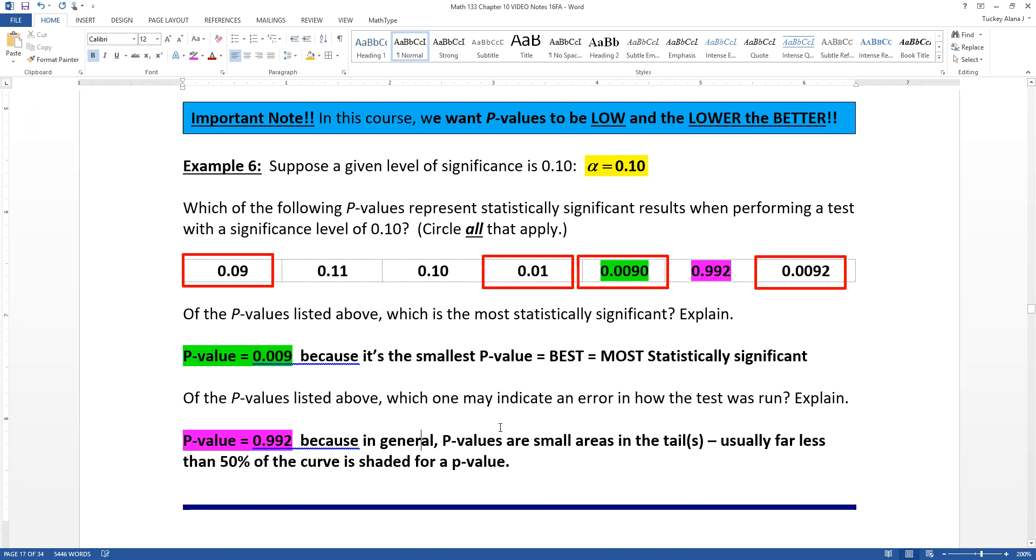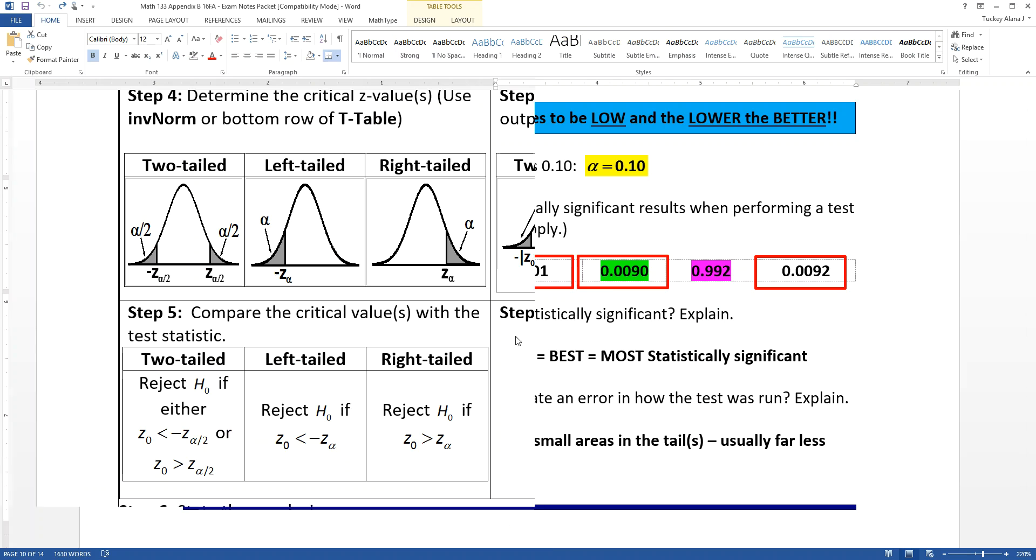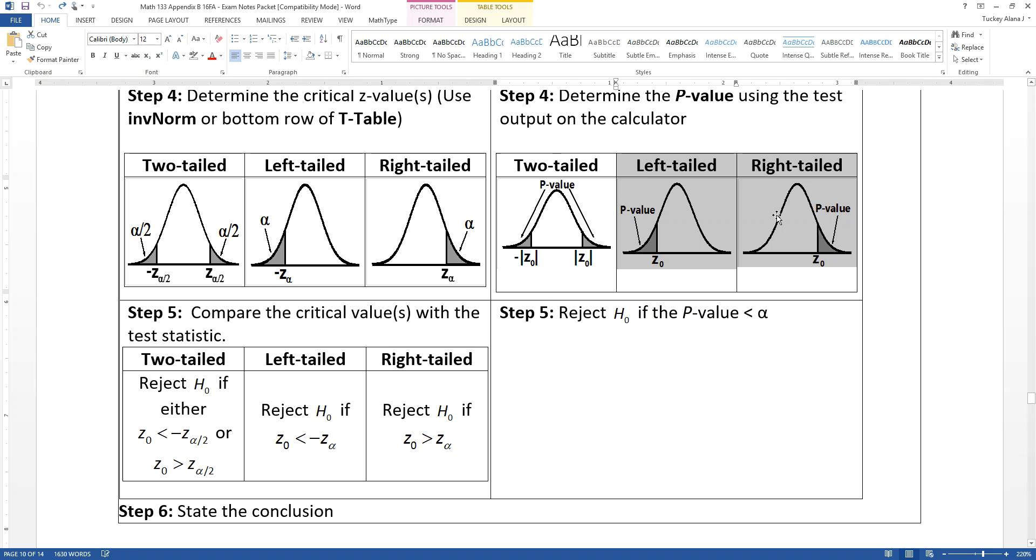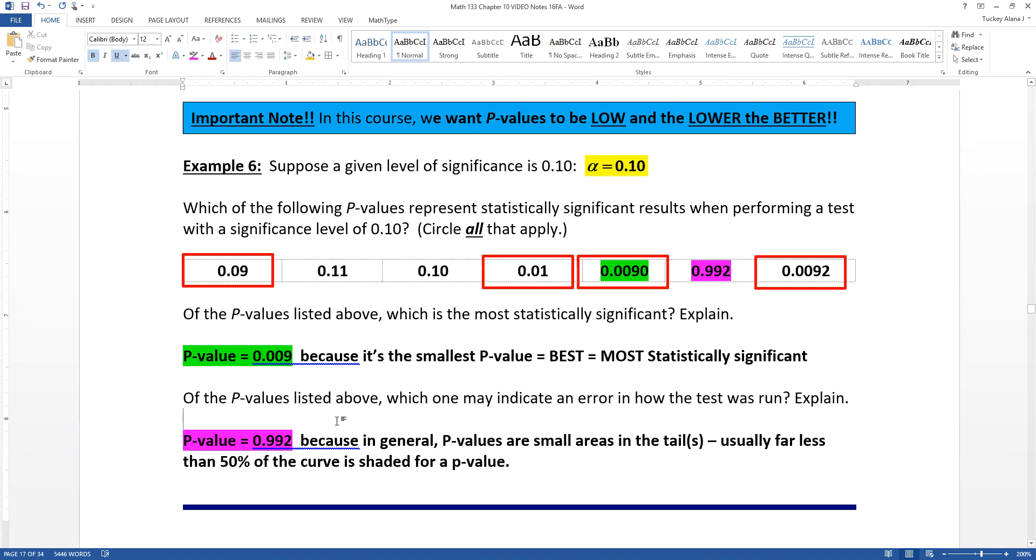All right. So in general, p-values are very small. They're areas in the tail or tails. So if it's a single tail test, a one tail test, it's just the area in the left tail or the right tail, like a left tail test or right tail test, or it could be both the tails together if it's a two tailed test. But either way, it's a small amount. And so having it be such a large value of 0.992 means 99.2% of that curve was shaded. That's probably indicating that there's an error somewhere because usually p-values are very small, less, much less than 50%, for example, of the curve should be shaded for a p-value for most problems, if you do it correctly.